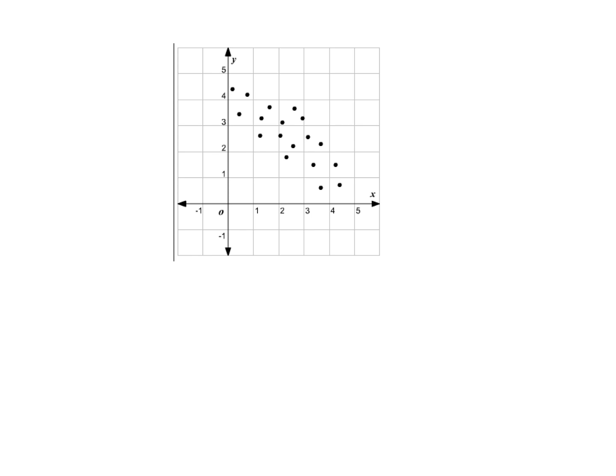Here we have another scatter plot and we want to draw a line of best fit. This one is indicating a negative correlation because as X increases the value of the points is decreasing. One thing to remember: the line of best fit is subjective. My line of best fit might not look exactly like yours, but they should be similar. There is not one right answer — it's your interpretation of where most of the points fit.